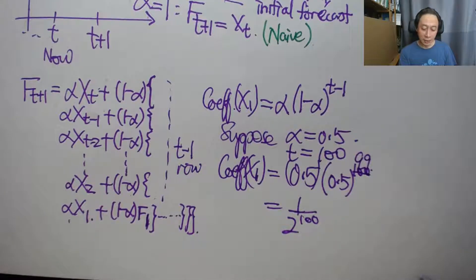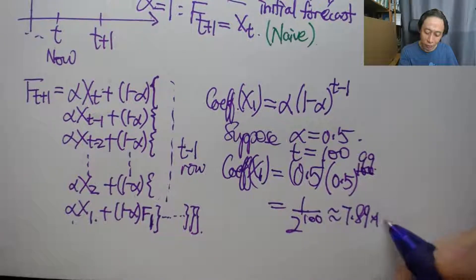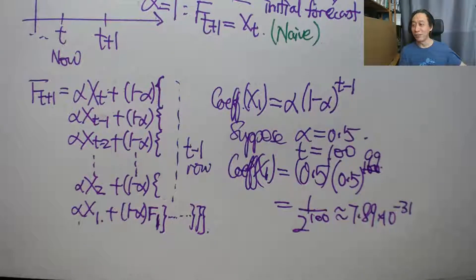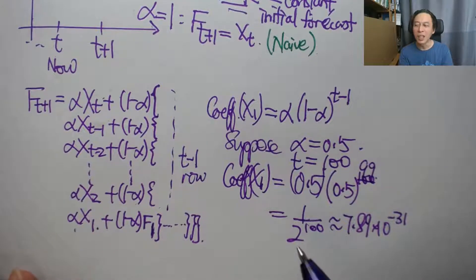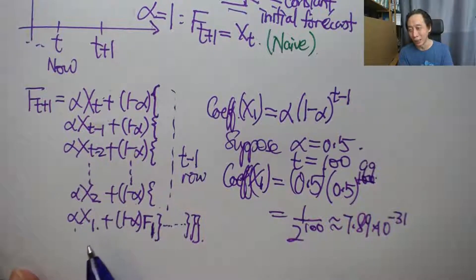So that just means 1 over 2 to the power of 100. That is a very, very small number. So if my calculation is right, it is basically going to take us to 7.89 times 10 to the power of minus 31. That is a very, very, very, very tiny yet non-zero number. So mathematically, the formula, the exponential smoothing method, keeps the constant, the coefficient alive by not setting it to 0.